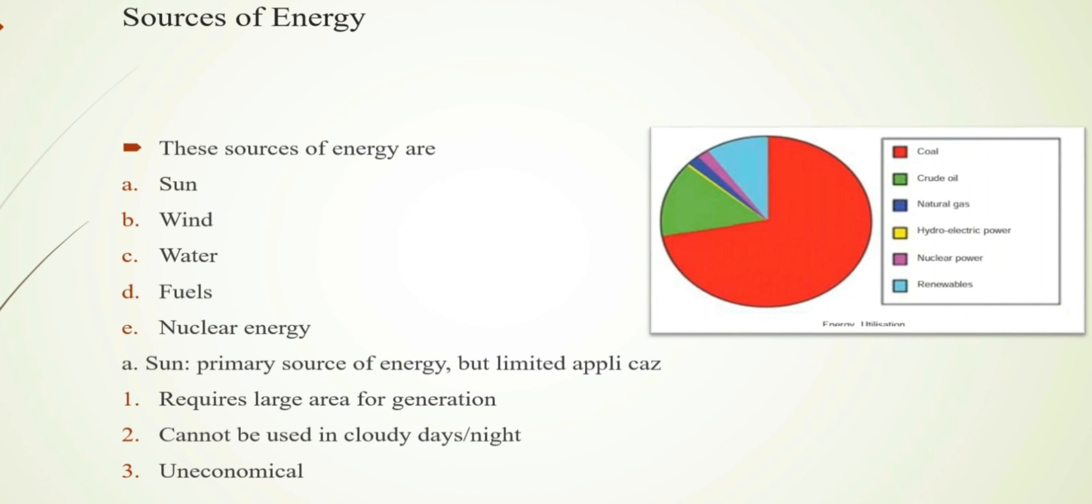Now with that being said, let's bring in our circle of energy utilization. As we can see, this whole area which is coal shows that the maximum energy used for generation of electrical energy is coal. In second place it's crude, and in third place it's renewable energy. In fourth place, natural gas and nuclear power are used almost equally, and in fifth place it's hydro electrical energy or hydroelectric power.